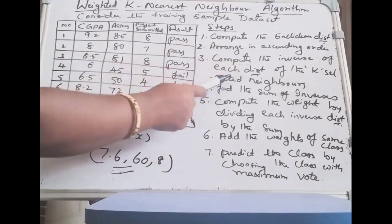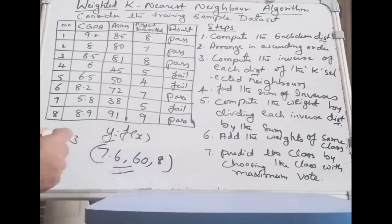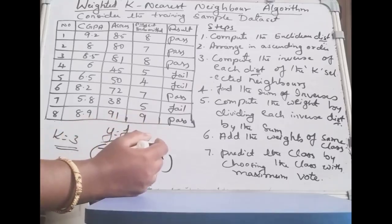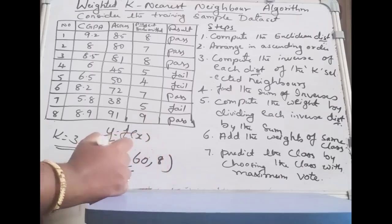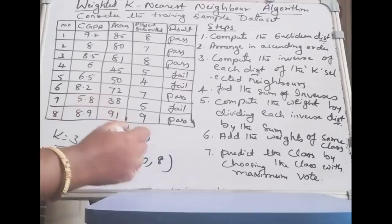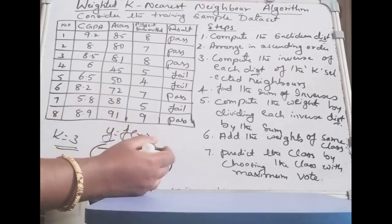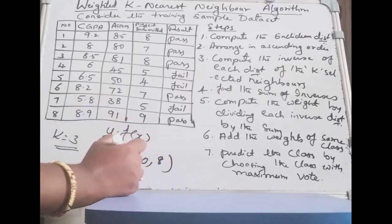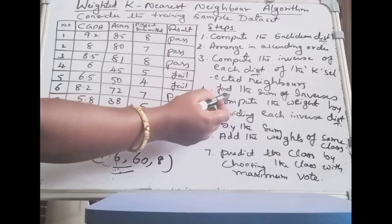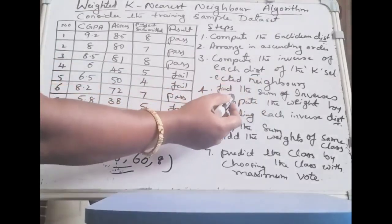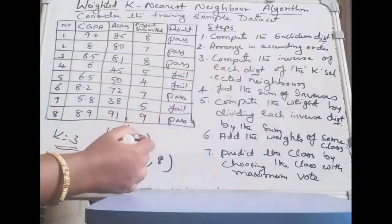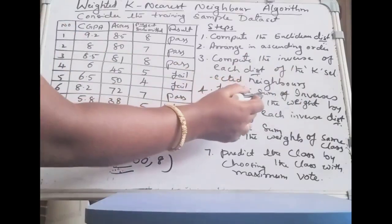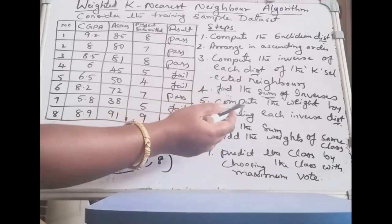Then compute the inverse of each distance of the k selected neighbors. Since k = 3, we select the 3 nearest neighbors — those closest to the test instance based on Euclidean distance. Then compute the sum of the inverses: take the inverse of each Euclidean distance and sum those inverse distances.